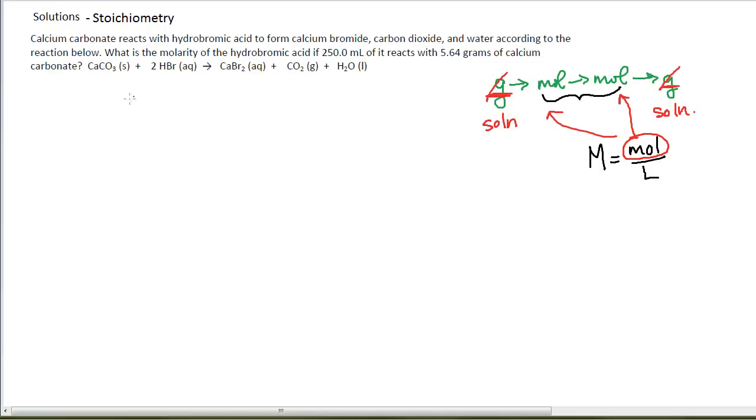So let's just jump in and do an actual problem. Calcium carbonate reacts with hydrobromic acid to form calcium bromide, carbon dioxide, and water according to the reaction below. What is the molarity of the hydrobromic acid? I want to know question mark molarity. I'm going to start pulling it out. If 250 milliliters of it, that's my hydrobromic acid solution, so that also goes with the HBr, reacts with 5.64 grams of calcium carbonate. That's this first guy because, of course, you remember your nomenclature. So I have 5.64 grams of calcium carbonate. I'm trying to find out about my solution.